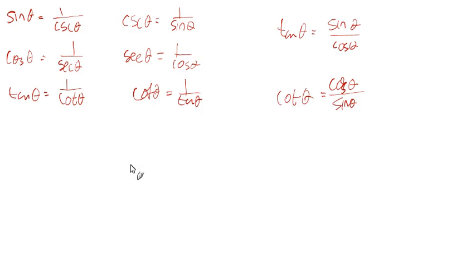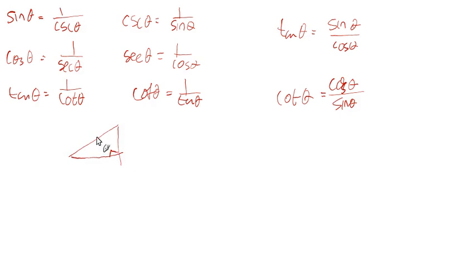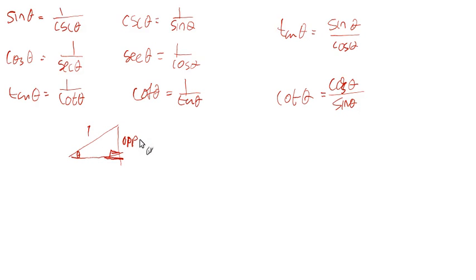Then you have the Pythagorean identities. If you have a right triangle whose hypotenuse is 1, and this is the angle we're talking about, with an opposite side and an adjacent side — well, the opposite over the hypotenuse, which is the sine, would just be equal to the opposite side. Opposite over 1 is just opposite, so that would be the sine of the angle.